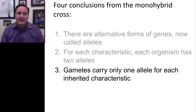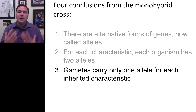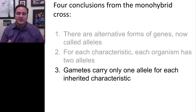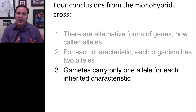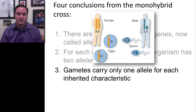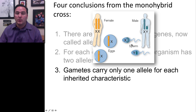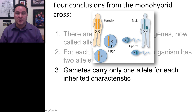The third conclusion is that gametes carry only one allele for each inherited characteristic. When an organism goes through the process of making eggs and sperm, those gametes are going to carry one of the alleles. For fruit flies, eggs and sperm are going to have only one of the chromosomes. The same is true for humans — when males make sperm, they are either going to have the X chromosome or the Y chromosome, not both. When females make eggs, they only have one of the X chromosomes, and the same is true for all other autosomal pairs.